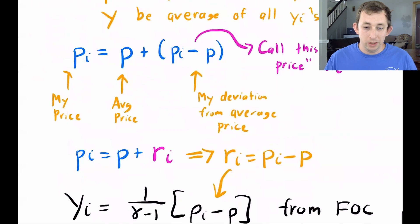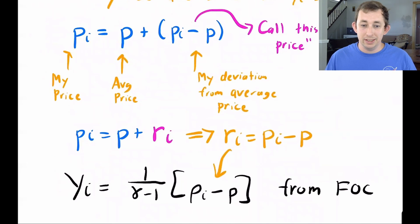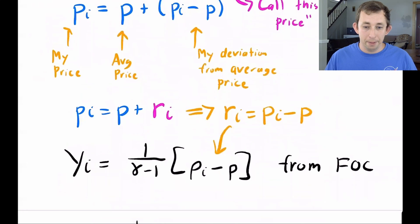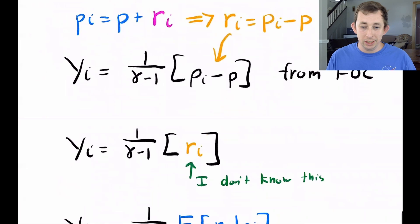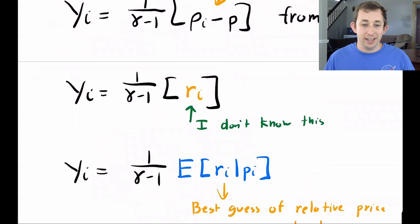If I keep going, I'm just going to rearrange that equation a little bit to say that the relative price is my price minus the overall price level and plug that back in for yi from our first order condition. Now remember that I don't actually know this because I don't know the overall price level in the economy, I'm guessing. So this is an expected value of ri given the price that I set for my good. So I'm just going to change that equation a little bit to reflect that fact.